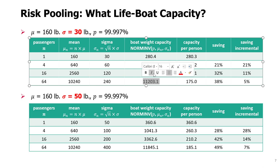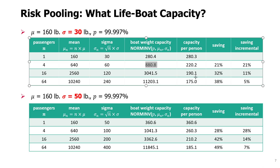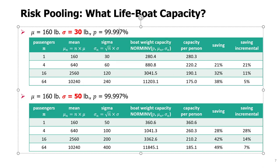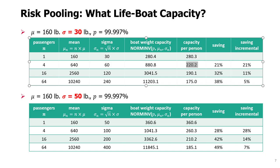Of course, the total capacity number is much larger as we increase the number of passengers. But notice that for four people, if you divide by the number of people, you get a capacity per person that is actually much smaller than 280.3. So in order to accommodate all people with probability 99.997%, we need much less space — and therefore much less cost — when we have a boat for four people. For a boat of 16, capacity per person is even less, and for 64 even less.